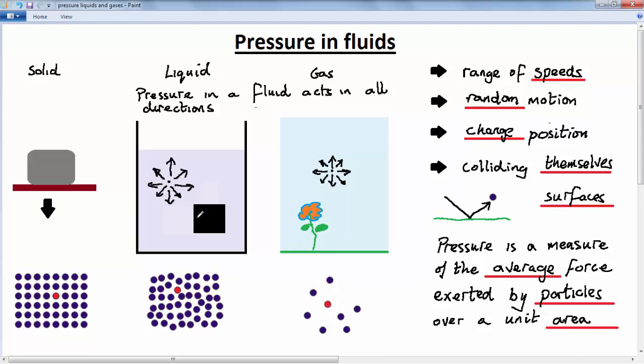So if I take this rectangular object and place it in the fluid, then the pressure at the moment will be acting on this surface. It will act in this direction. But on this surface, it will act in this direction. On this surface, it will act in this direction. And on this surface, it will act upwards. It always acts at right angles to the surface.